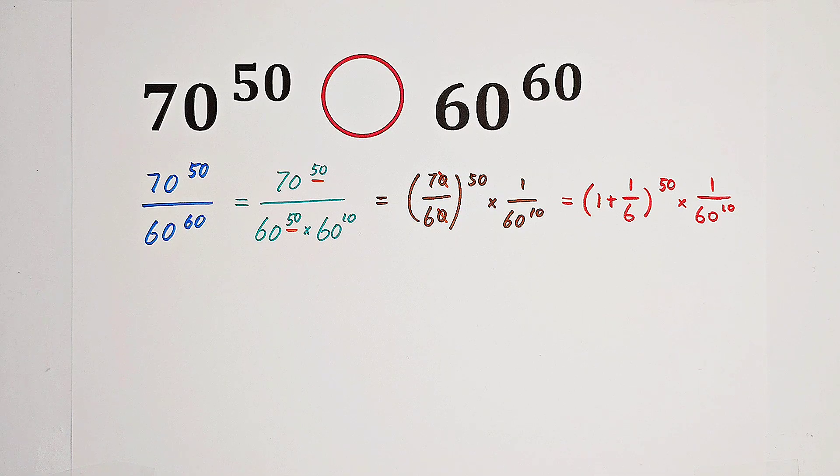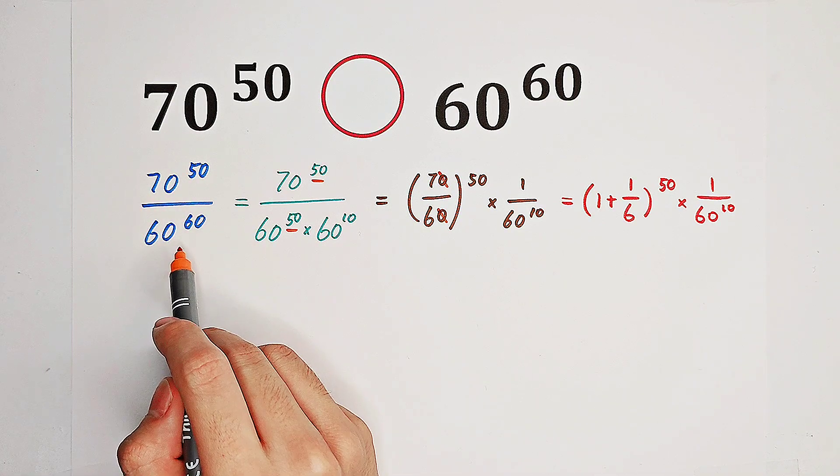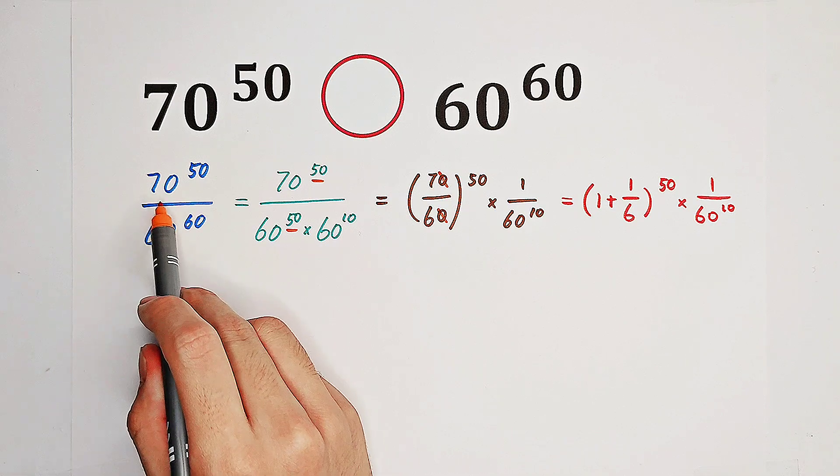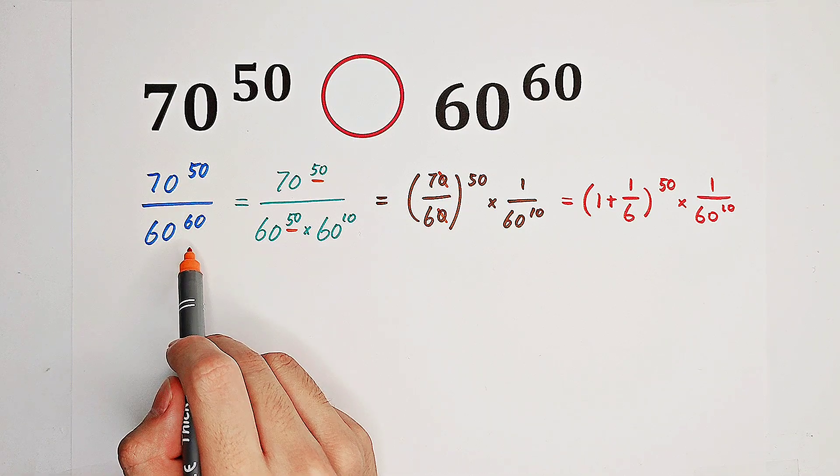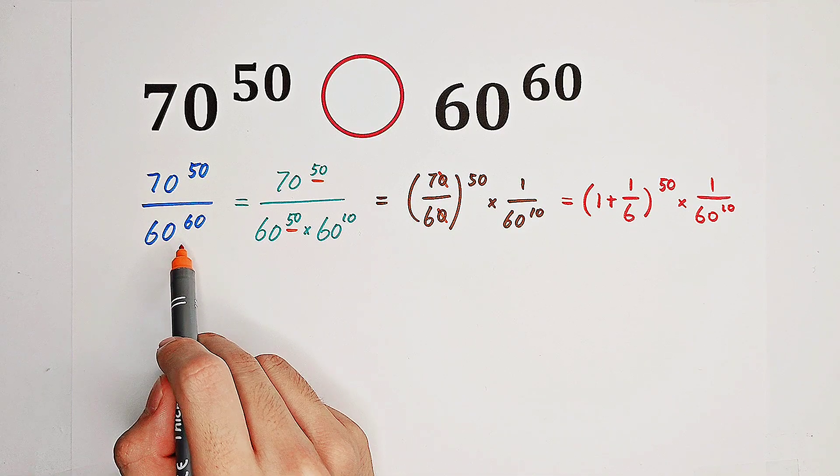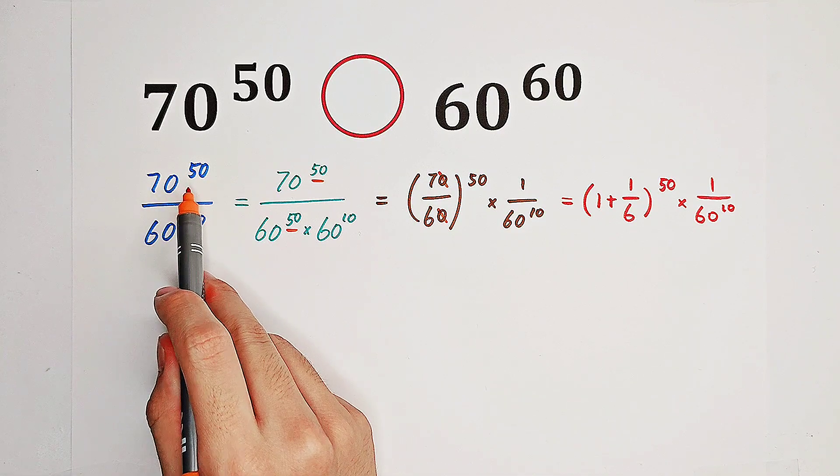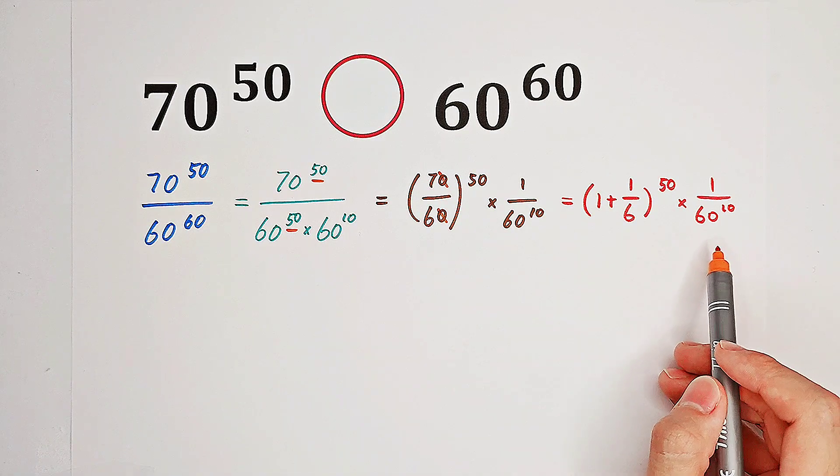Our goal is to compare their quotient with 1. If this is greater than 1, then 70 to the power of 50 is greater than 60 to the power of 60. If this is equal to 1, then the numerator is equal to the denominator. If this is less than 1, 70 to the power of 50 will be less than 60 to the power of 60. So we just have to compare this one with 1.